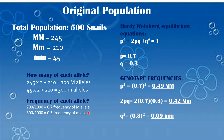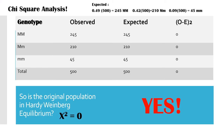Now we have to check to see if the original population is in Hardy-Weinberg equilibrium. We are going to use the equation p² + 2pq + q² = 1. We find the genotype frequencies by using p² for homozygous dominant, 2pq for heterozygous, and q² for recessive homozygous. The frequencies found using the Hardy-Weinberg equilibrium equation help us get the expected population of each genotype.